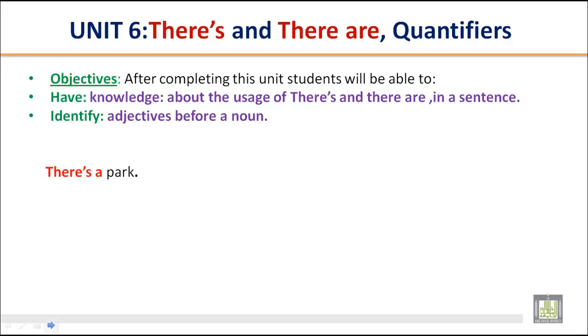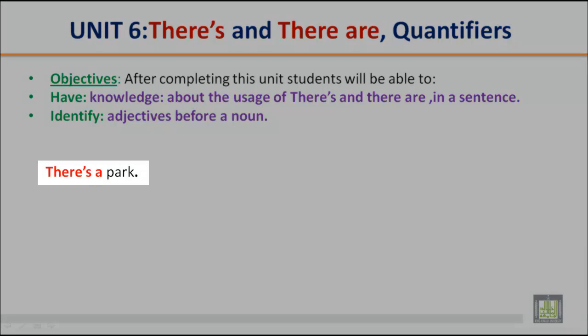Let's look at the first statement: there is a park. Now the second statement: there is no mall. So if you look at these two statements — there is a park, there is no mall — we use there is with a singular, single thing. There is a park indicates there is one park; there is no mall.